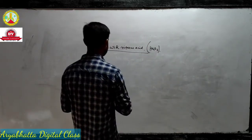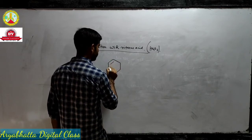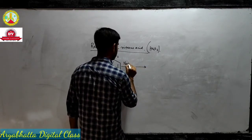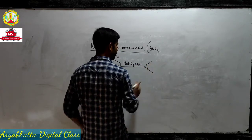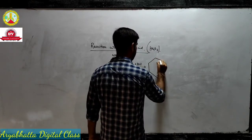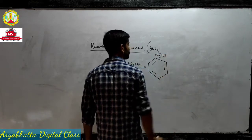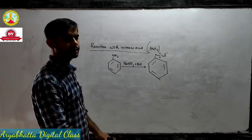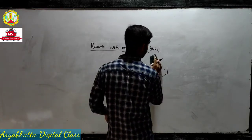In NCERT, they have also given the aromatic amine reaction. We have seen this reaction before in Sandmeyer's reaction — the first step of Sandmeyer's reaction produces N2Cl, which is benzene diazonium chloride. We will discuss the diazonium group separately in our next topic.